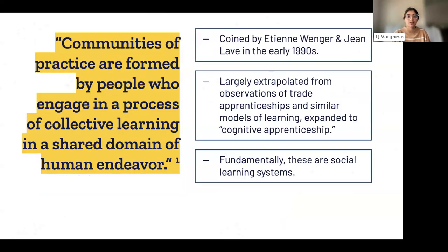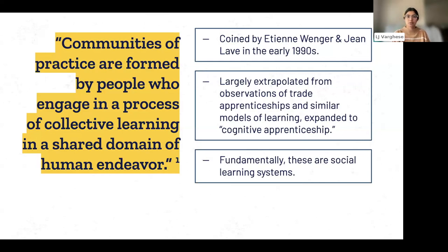Communities of practice are formed by people who engage in a process of collective learning in a shared domain of human endeavor. This concept was coined by Etienne Wenger and Jean Lave in the early 1990s. They started by studying apprenticeships — looking at how apprentices who engage in a trade learn that trade — and then asked whether this model of learning could apply to more cognitive or abstract types of learning. They found that it could.